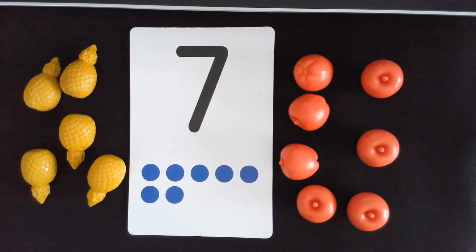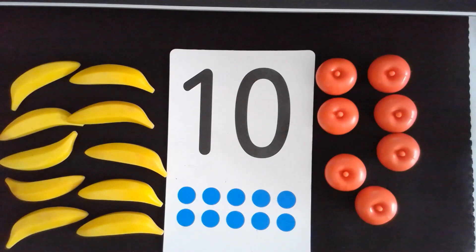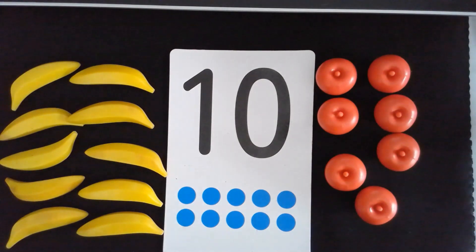Which amount shows seven? There are seven apples. Which amount shows ten? There are ten bananas.